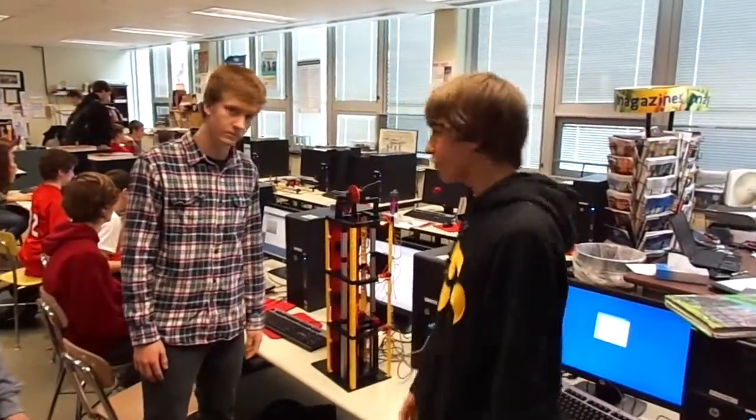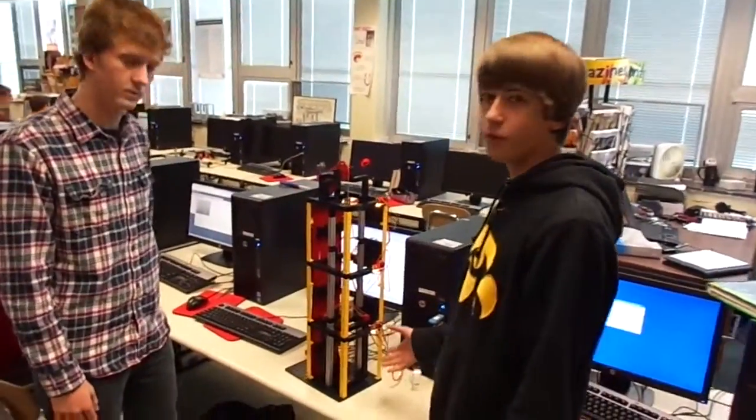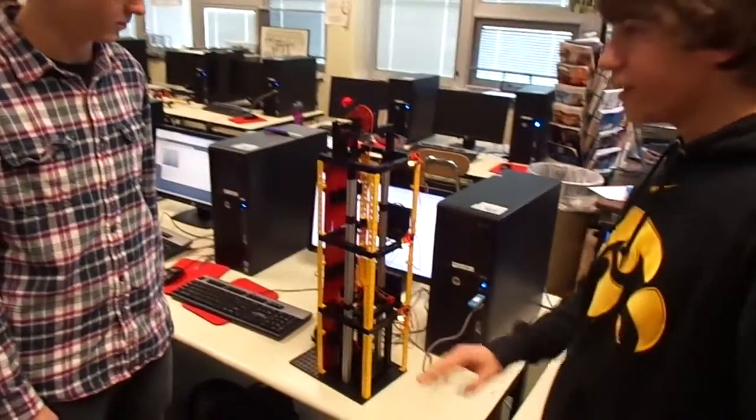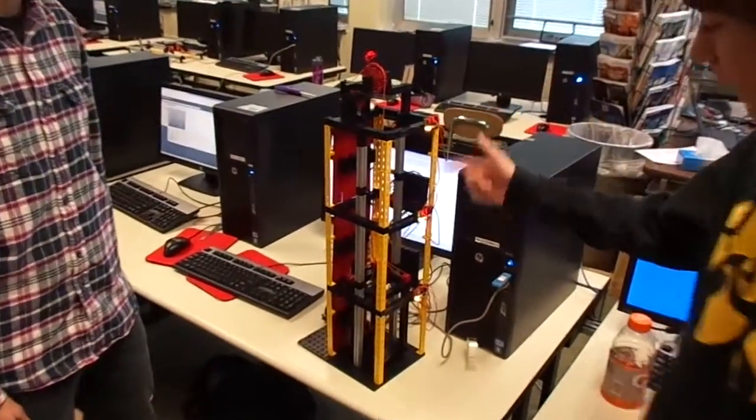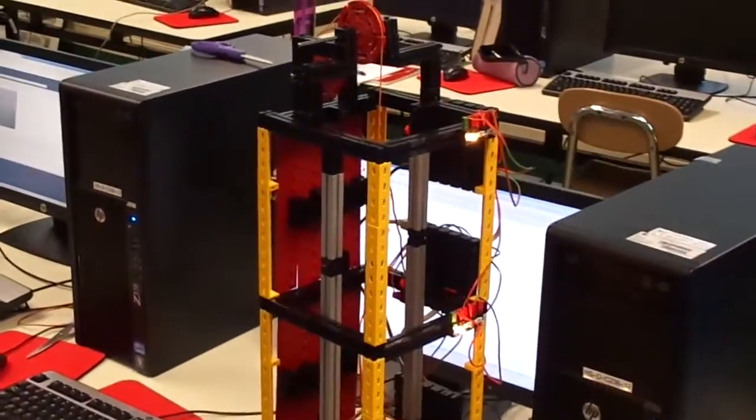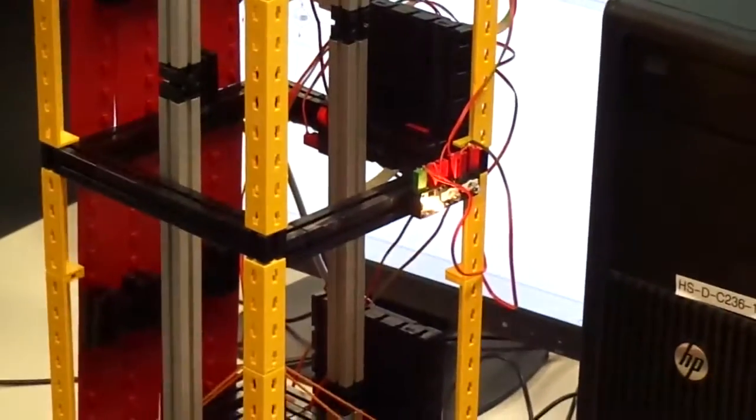Our design brief told us to make an elevator which could go between three floors with any variation and we had to have lights, but we went beyond that and made three lights per level to make it more interesting and show where the elevator was actually located.